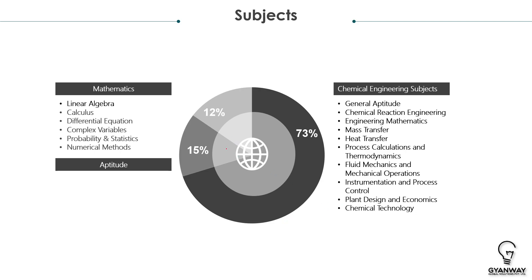There are three parts to this examination. The very first part is Engineering Mathematics, then you have General Aptitude, and then you have the main core Chemical Engineering subjects. Mathematics holds a weightage of 12%, General Aptitude has a weightage of 15%, and Chemical Engineering has a weightage of 73%. The exam is a total of 100 marks.